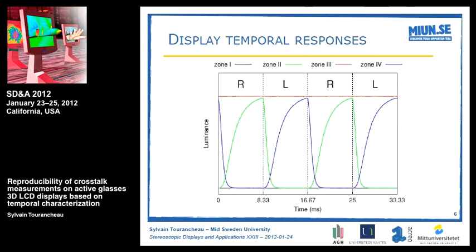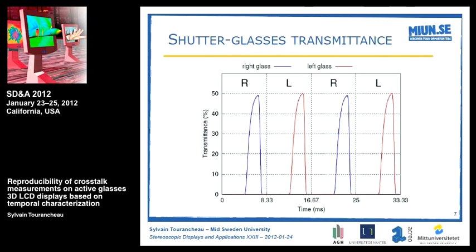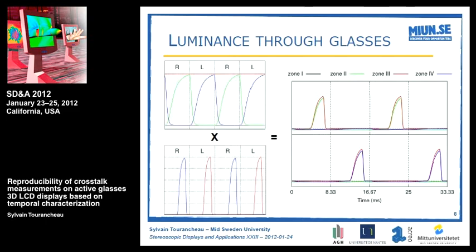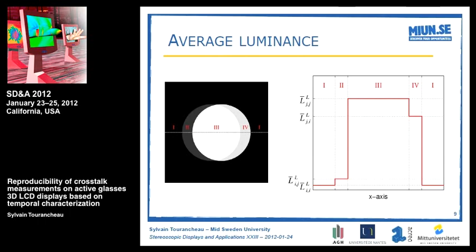On these displays, the right and left signals are separated and guided to each eye via active shutter glasses. The temporal transmittance of the shutter glasses, combined with the display's temporal response, yields the luminance signal as seen from each eye. Averaging those signals over time gives, for each region, an average luminance corresponding to that region.